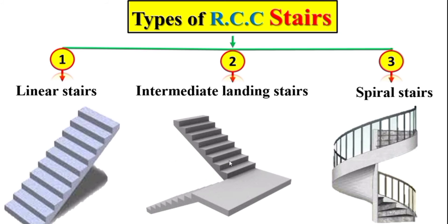Intermediate landing stairs are mostly provided in public buildings such as hospitals, schools, universities, and shopping malls. Linear stairs are normally provided in residential buildings and are also used in public buildings as emergency stairs — for example, during fire, earthquake, or other natural disasters — allowing users to move between floor levels.